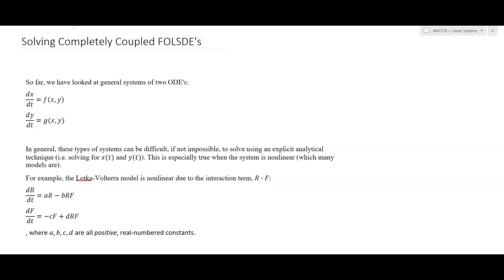So let's recap. So far we've looked at a general system of two ODEs where dx/dt can potentially depend on x and y, and dy/dt can also potentially depend on both x and y.